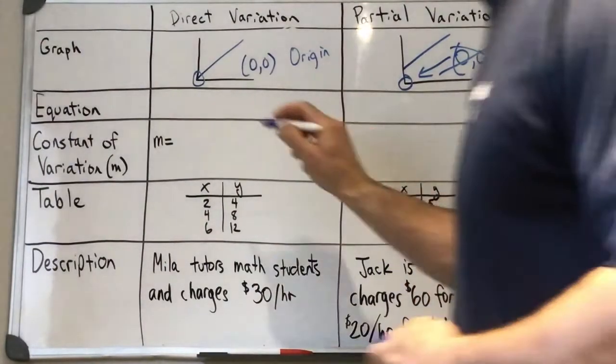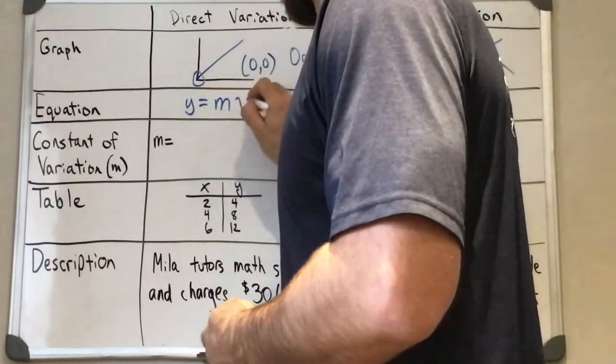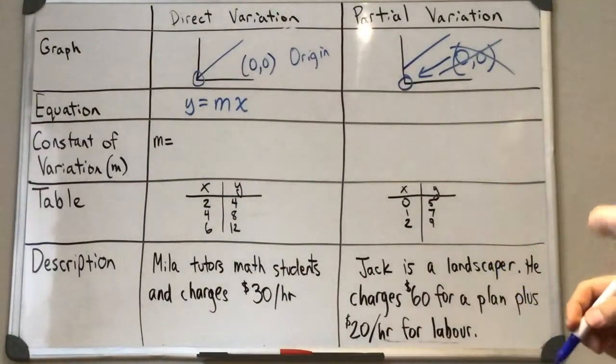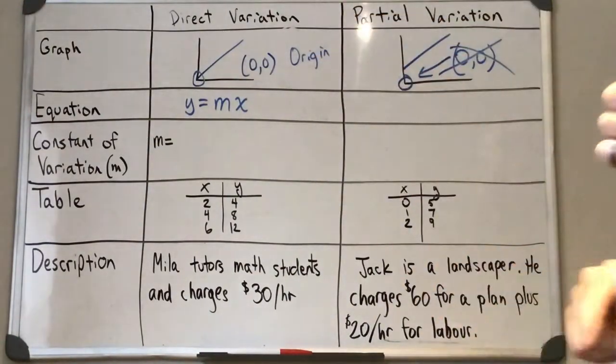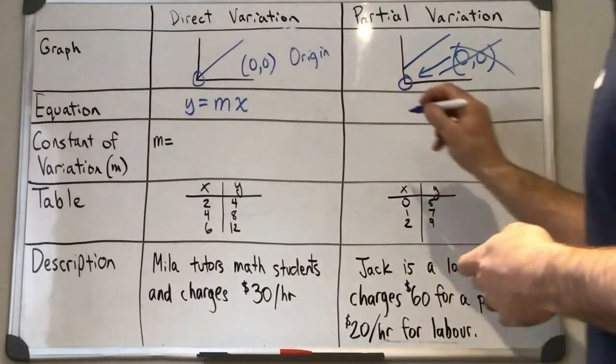So for our equations, we have two equations we'll look at here, the first one being y equals mx for any equation in the form for a direct variation.